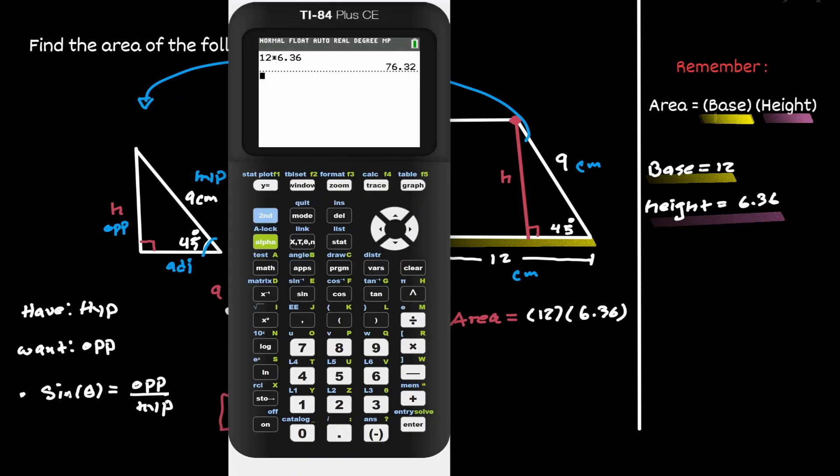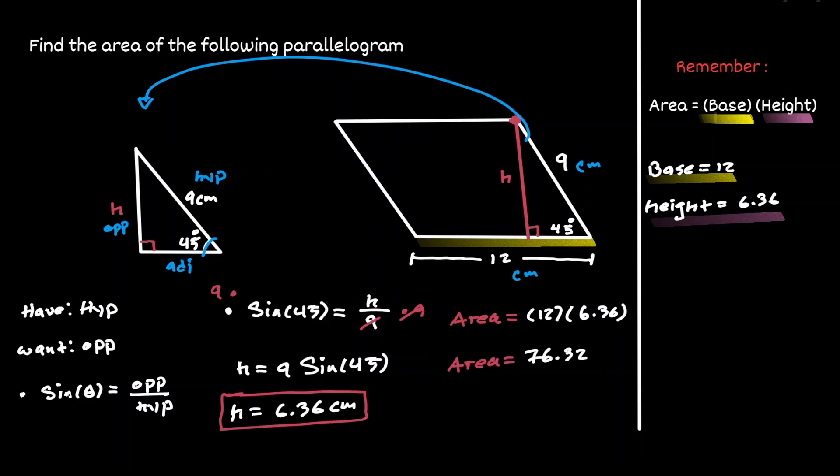Now we know that the area is 76.32. Because the measurements were given in centimeters, the unit for the area is centimeters squared. We have properly found the area of this parallelogram.